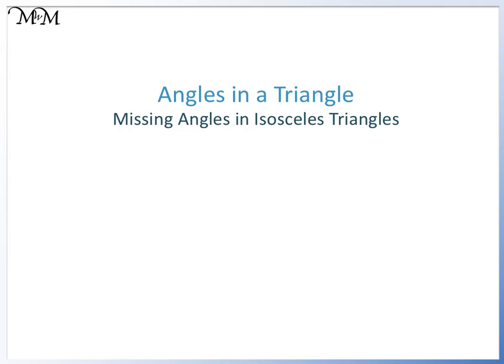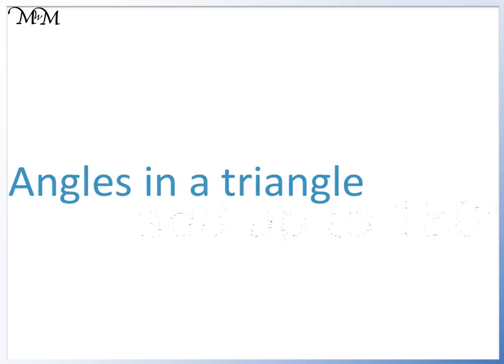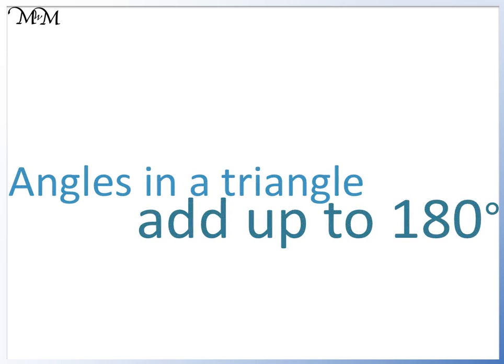Hi and welcome to our lesson on angles in a triangle. We will be looking at calculating missing angles in isosceles triangles. Angles in a triangle add up to 180 degrees.